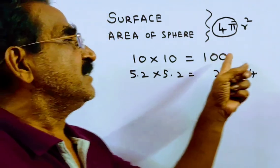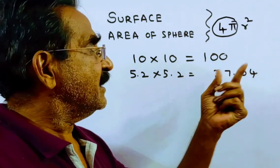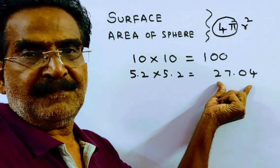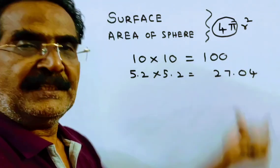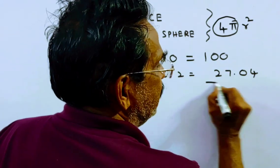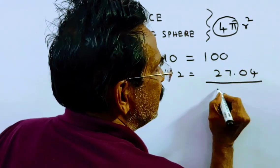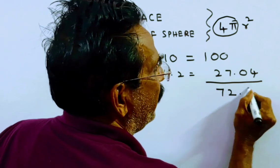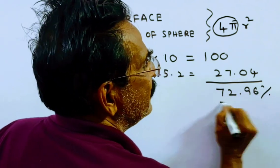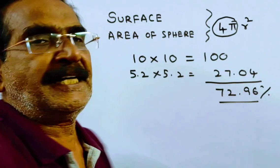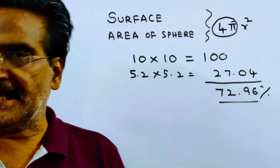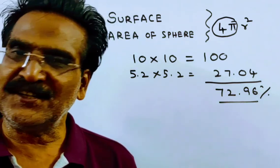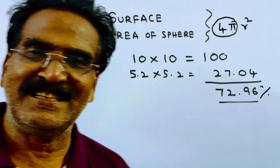This was the original area. This is the reduced area. So the difference gives the decreased percent — 72.96% is the decreased percent in its surface area. Thank you. Have a nice day.